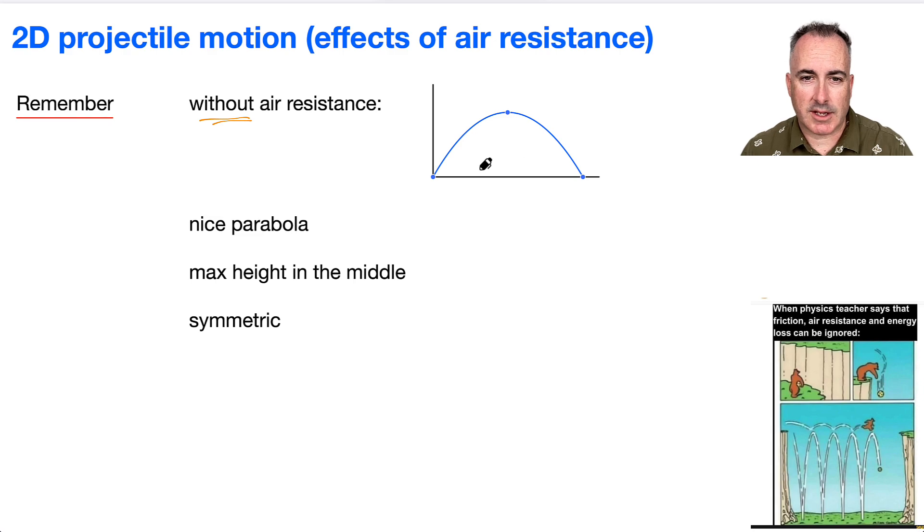We can also say that the y direction right here, like the initial speed right here, so u_y, will be the same thing as down here, for example, v here. If we call this here v, we call this one here u, we can say that u_y is equal to negative v_y.